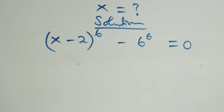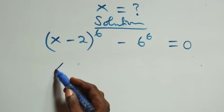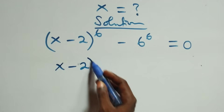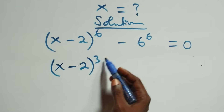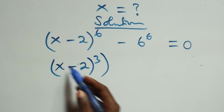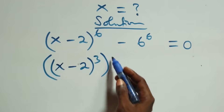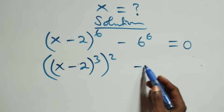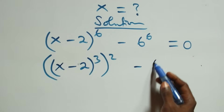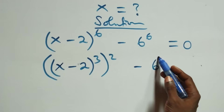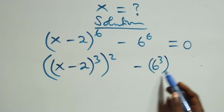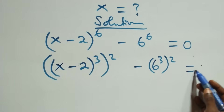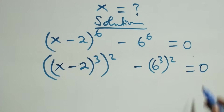Next step, we can write this as x minus two, raised to power three, then raised to power two — since two times three equals six — and minus we also have six raised to power three, then raised to power two, and equals to zero.